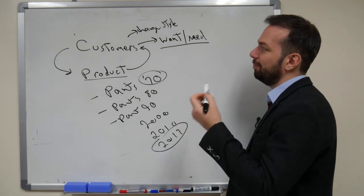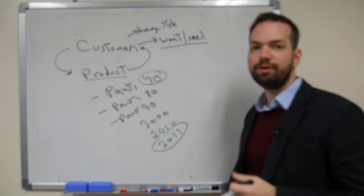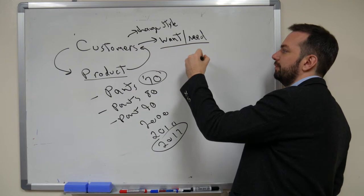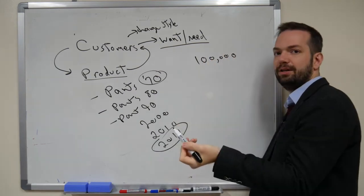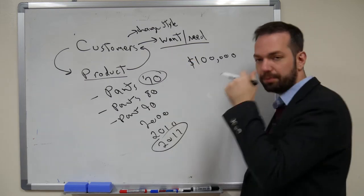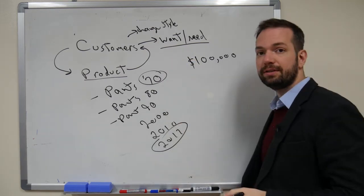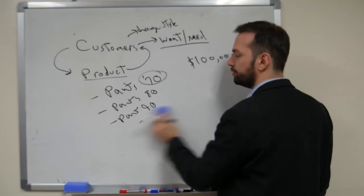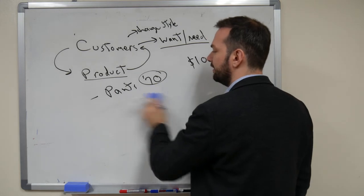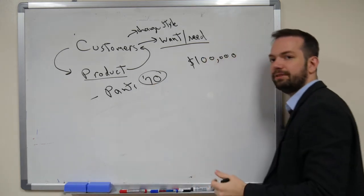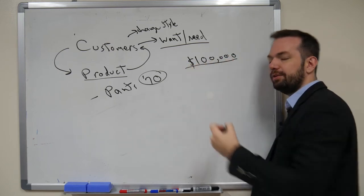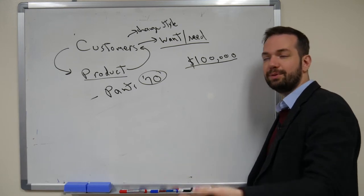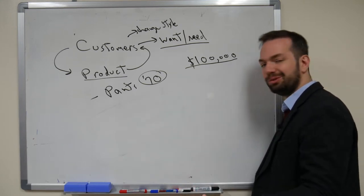So, the point is, the customers have changed over time. What if I was selling, let's say, $100,000 worth of pants per year? So, $100,000 worth of pants per year in the 1970s. If I still produced the same pants, sorry, let me erase this. If I still produced the same pants every year since the 1970s, do you think that I would still be making $100,000 per year? Let's say it was popular in the 70s.